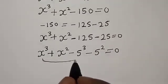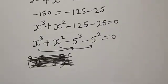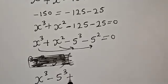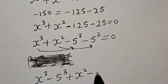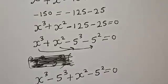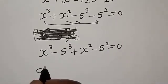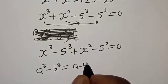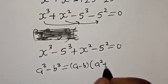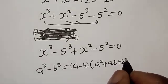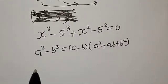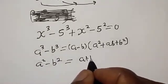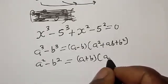By comparing terms, we have s raised to power 3 minus 5 raised to power 3, plus s squared minus 5 squared, is equal to zero. Remember this identity: a raised to power 3 minus b raised to power 3 equals a minus b times a squared plus ab plus b squared. Also, a squared minus b squared equals a plus b times a minus b.